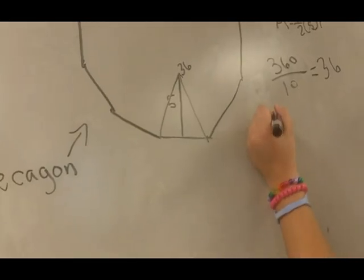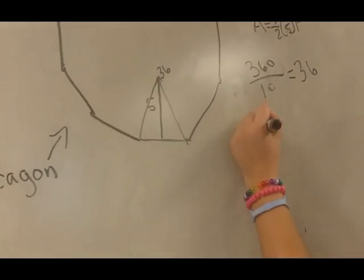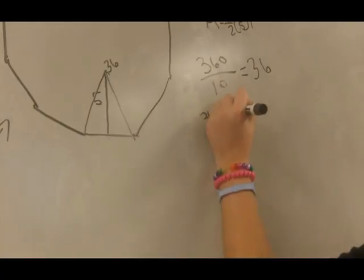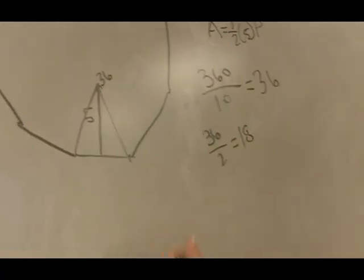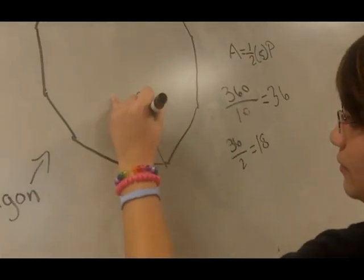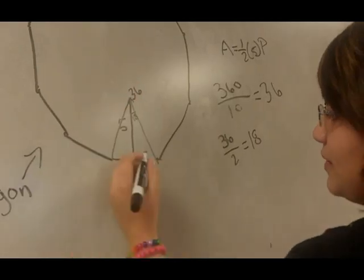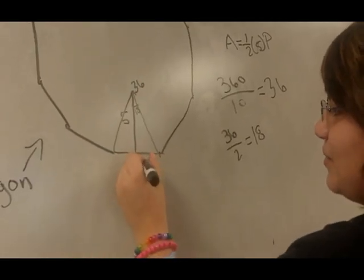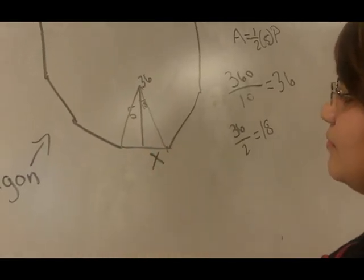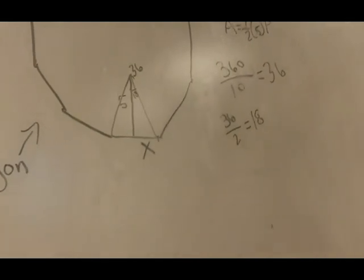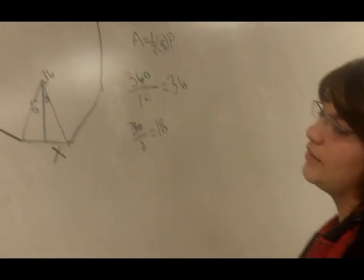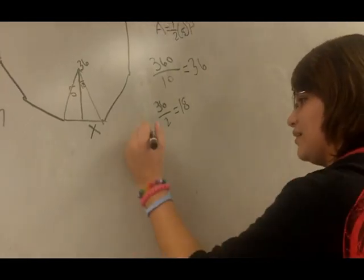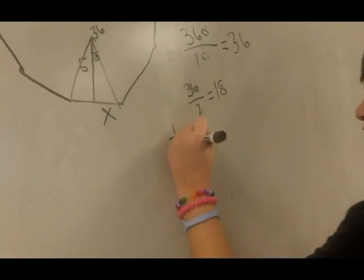Now you have to bisect it, so that would equal 18. You want to find half of the side, so you use tangent.